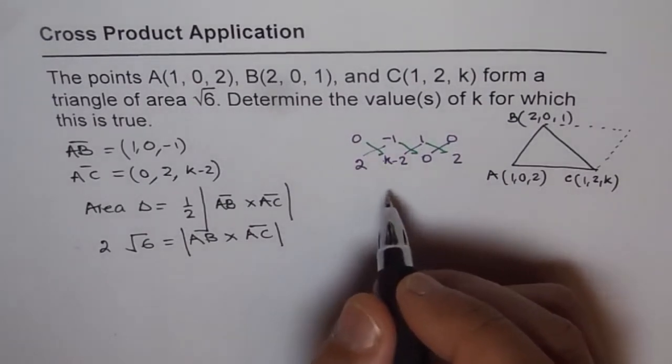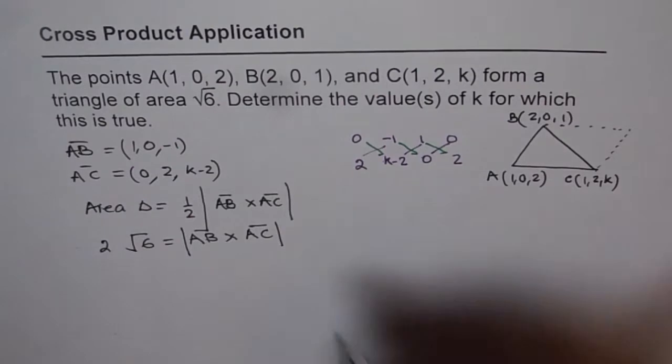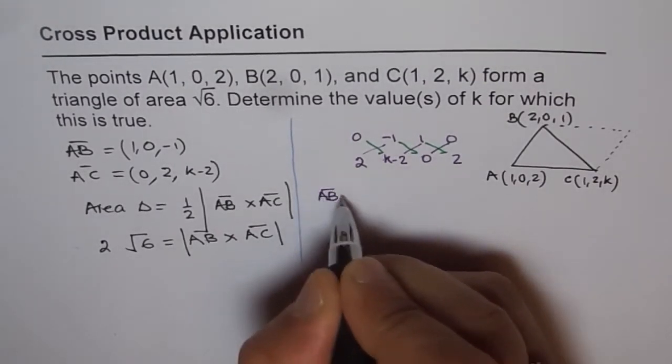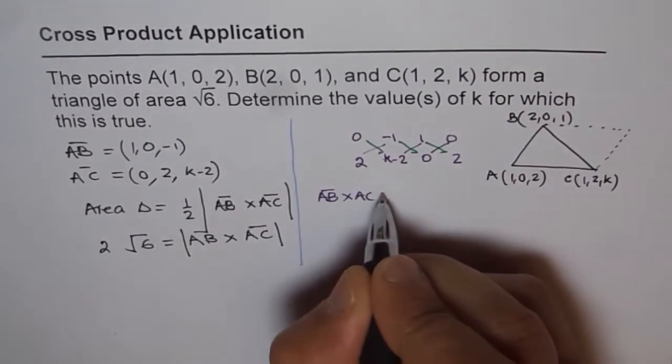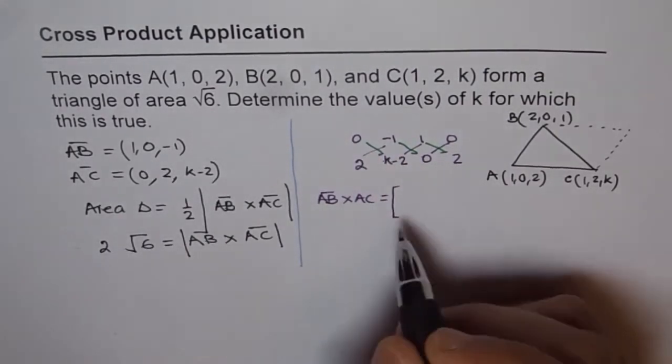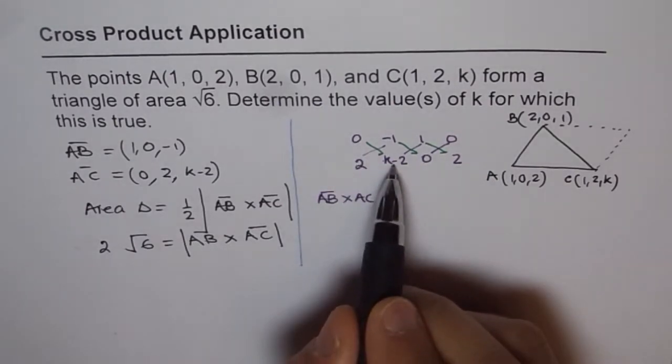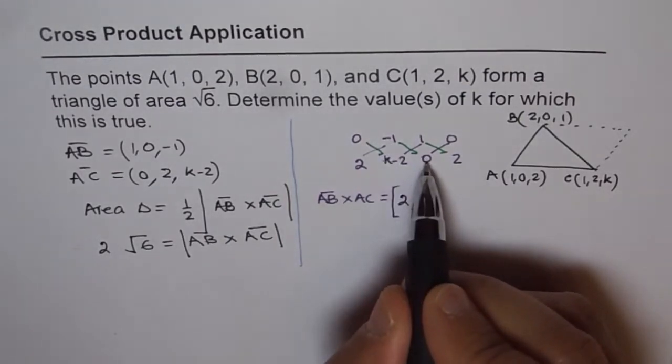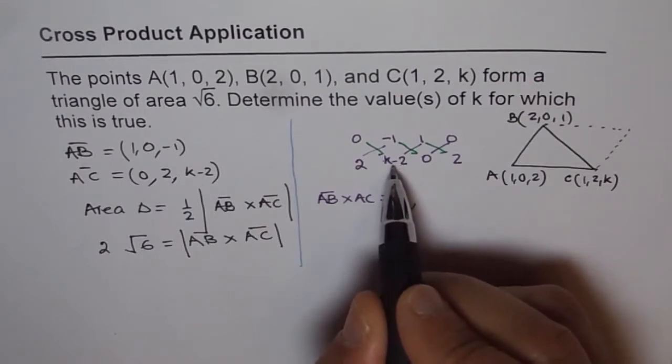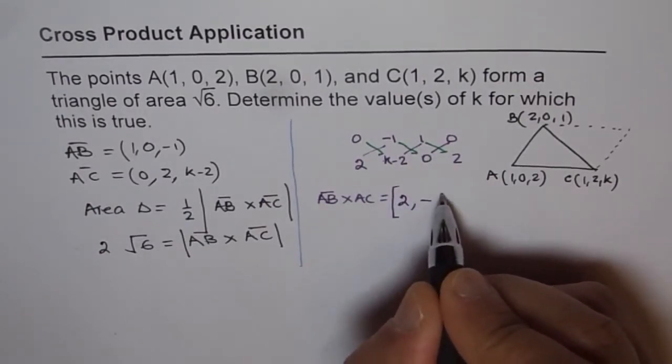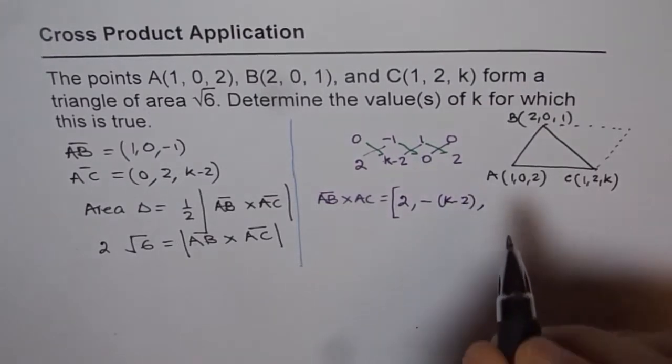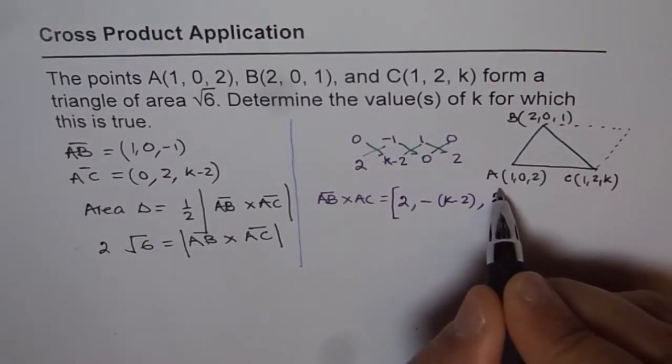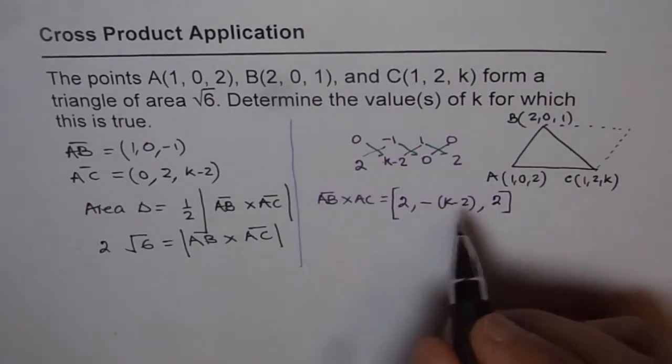We have AB cross AC. Let me write this clearly. The i component is 0 times anything, which is 0, minus 2, giving us -2. The j component is minus (k-2), or -(k-2). The k component is 2 minus 0, so 2. Those are your i, j, k components.